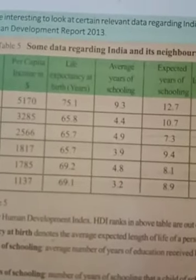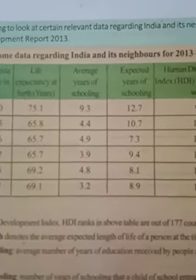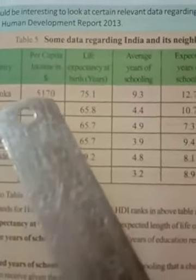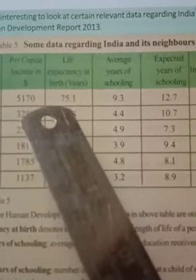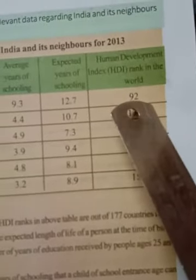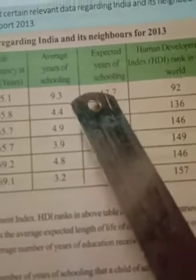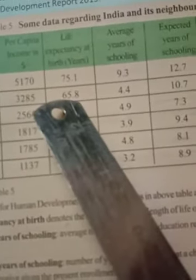The given table shows data regarding India and its neighbors for 2013. For Sri Lanka, the per capita income is 5,170, its lifespan rank is 92, education is 9.3 and expected years of schooling is 12.7. For India, the per capita income is 3,285, lifespan is 65.8, schooling is 10.7 and 4.4, and India got rank 136.